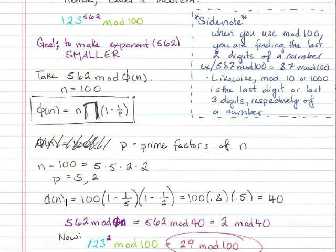Therefore, we can calculate phi n using the formula is n times the products of 1 minus 1 over 5, one of our p's, times 1 minus 1 over 2, our other p, which is just 40.